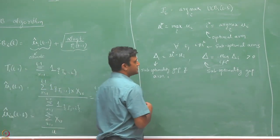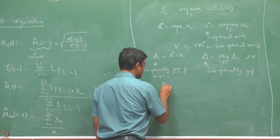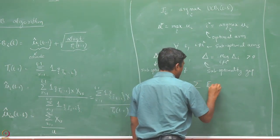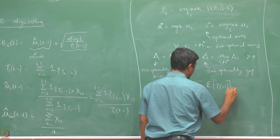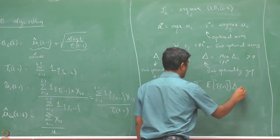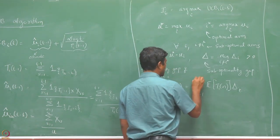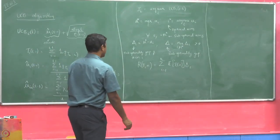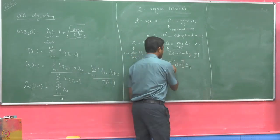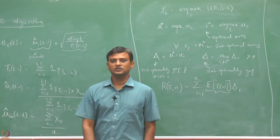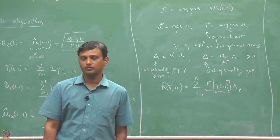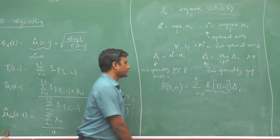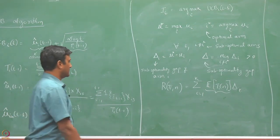With this notation, the regret of any policy over n rounds can be given as the expected number of pulls times delta_i, summed over arms i from 1 to k. To bound the regret of the UCB algorithm, we just need to bound the expected number of pulls of each arm — in particular, the expected number of pulls of the suboptimal arms.